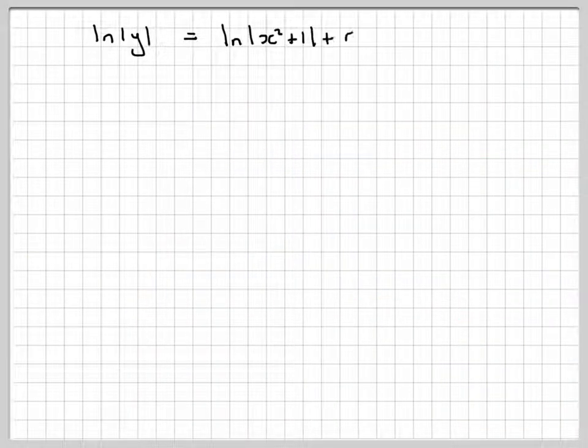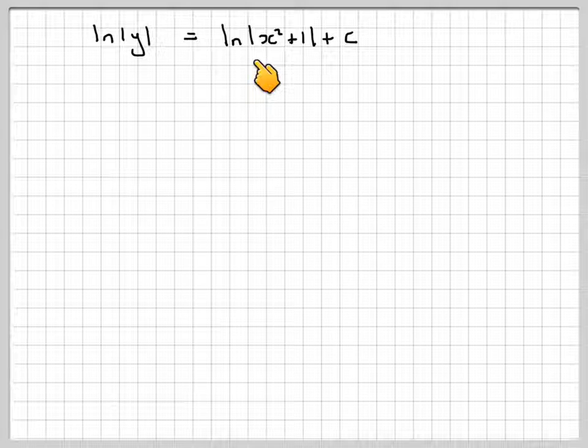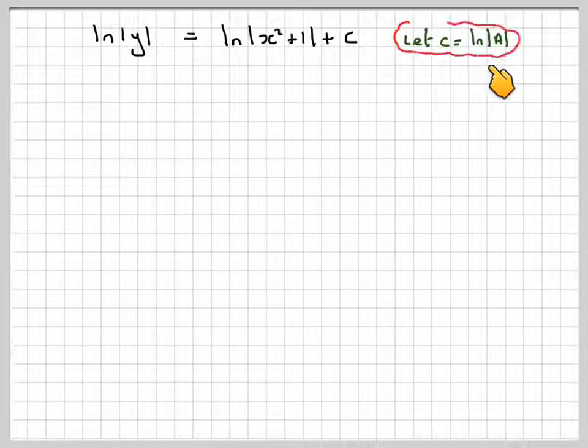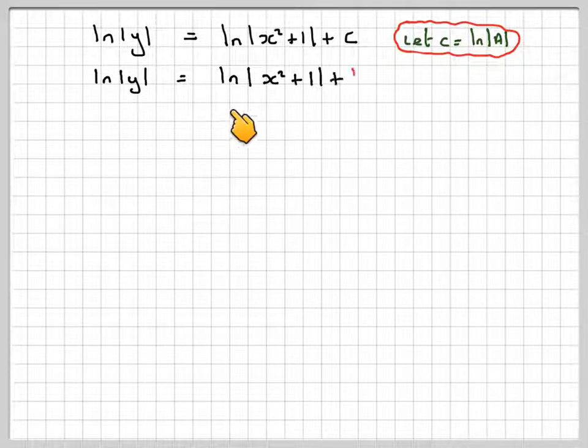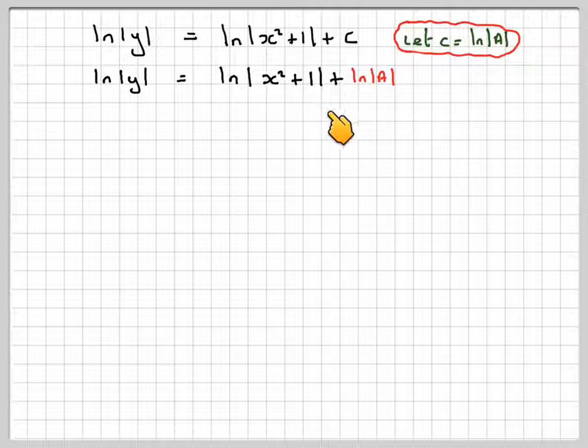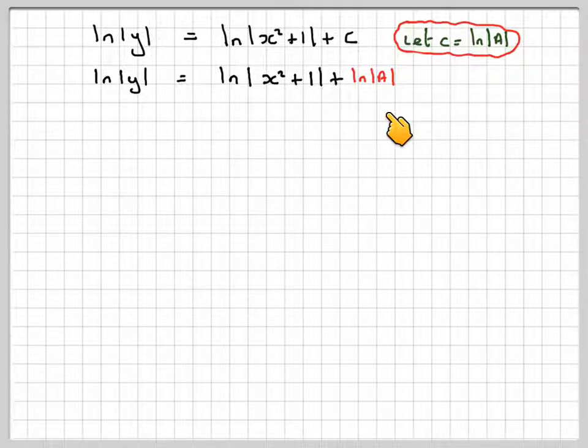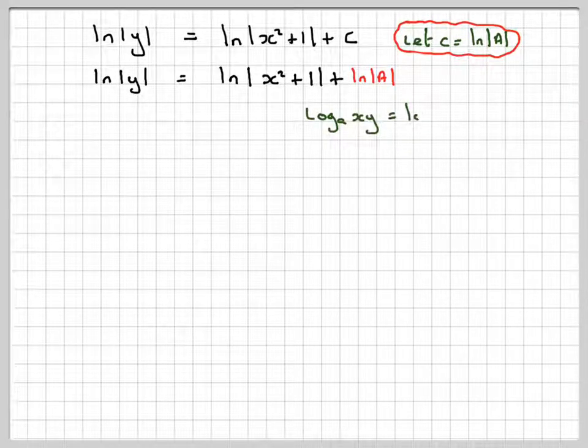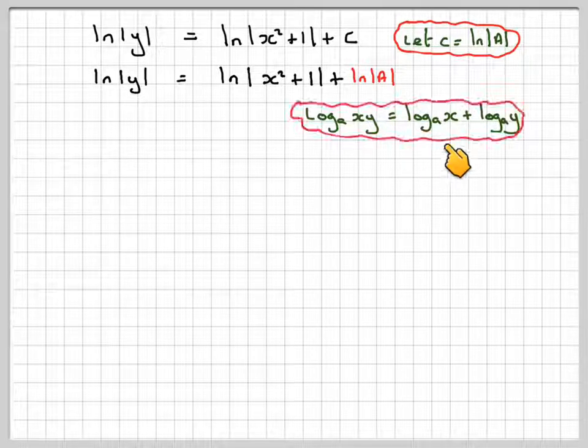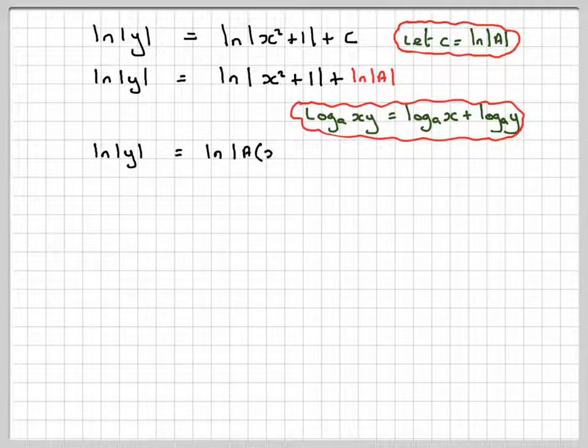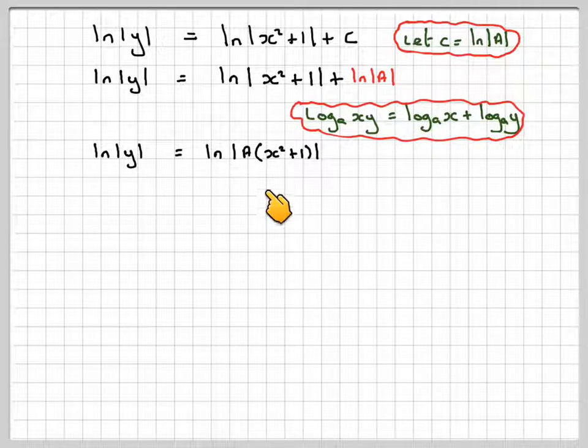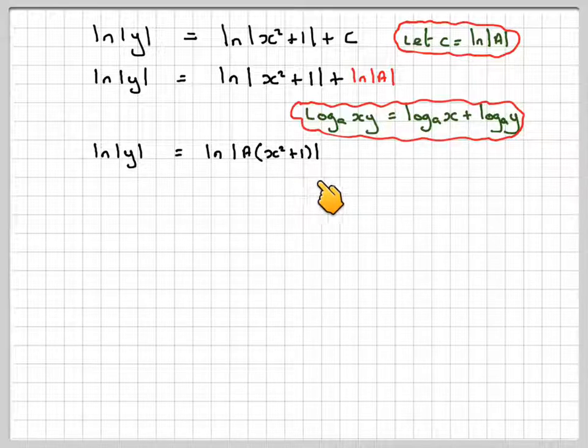Carrying on, if you let c equal ln of the absolute value of a, you get ln of y equals ln of x squared plus 1 plus ln of a. Using the rule of logarithms, log of x plus log of y equals log of xy, which is what we've got here. We can rewrite the right-hand side as ln of a times x squared plus 1.